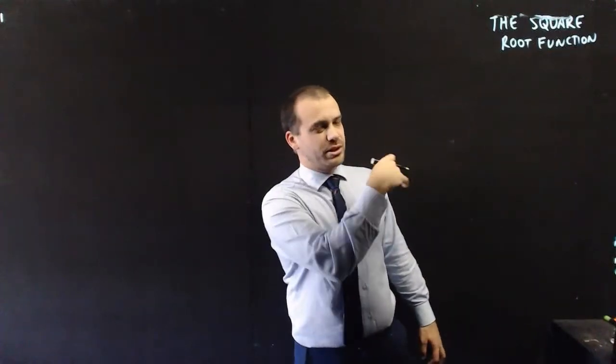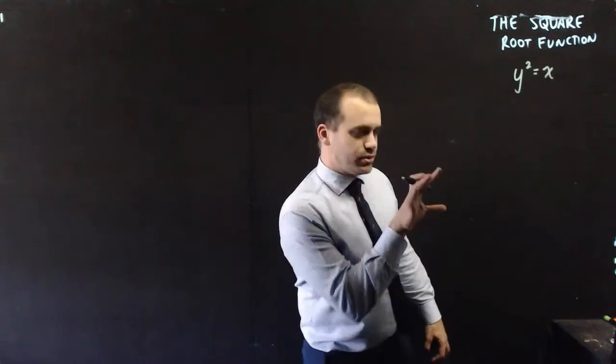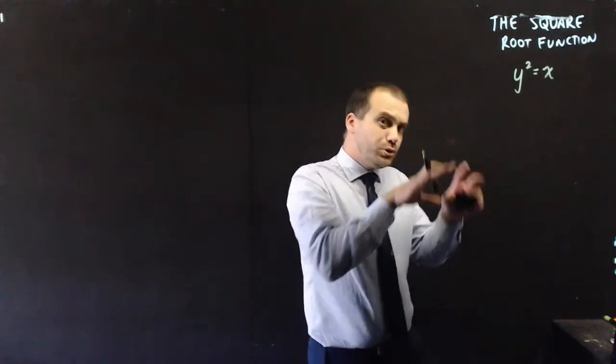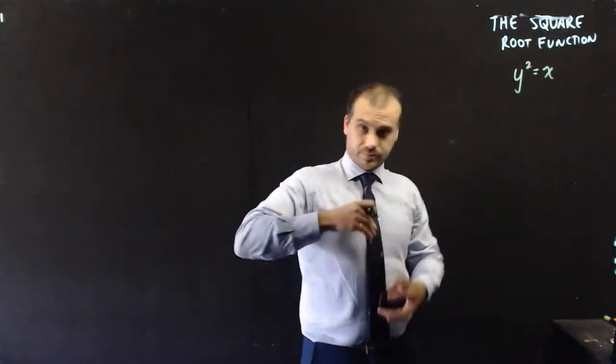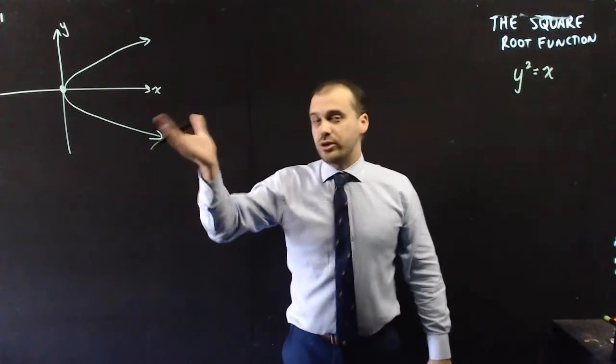Now we're going to be talking about the square root function, but the first thing I do here is not going to have a square root in it at all. So the equation is y squared equals x. It looks like a quadratic equation, but the y's and the x's are swapped. And that's exactly what it looks like when you graph it. So it's just a quadratic on its side.